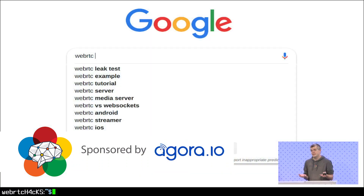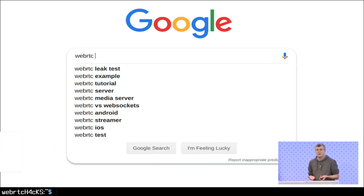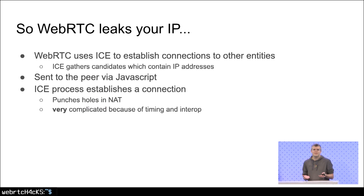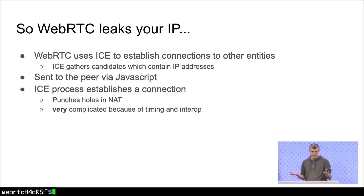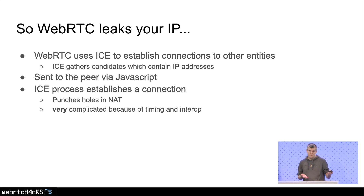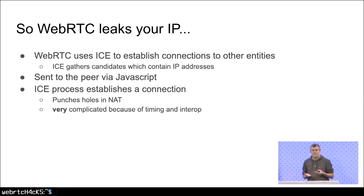One of the first things that comes up if you search for WebRTC on Google is something about a WebRTC leak. Because WebRTC is going to give your IP to JavaScript. Down in the WebRTC lib, WebRTC uses a process called ICE to establish connections between browsers or any other entity. This ICE process gathers something called candidates, and each of those candidates contains an IP — private IP, public IP, or something else — and that is sent to the peer via JavaScript.